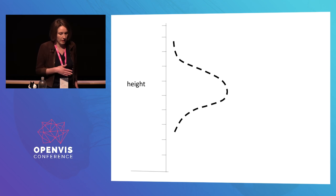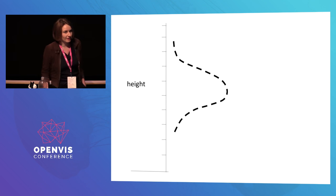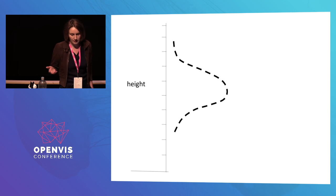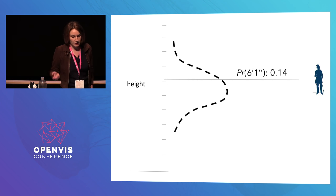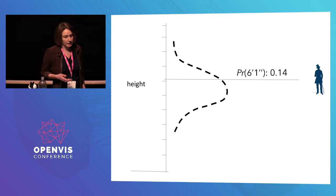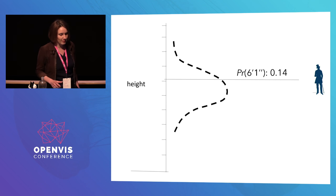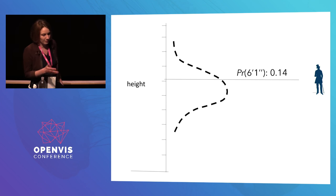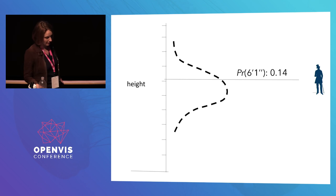Galton was really excited because he knew this was super powerful. Suddenly, without any knowledge about a family's heights, he could simply take this shape and say, for instance, that a random boy has a 14% probability of being 6'1". This was really powerful. But he also knew he could confuse people with it — because really, what does this mean? That boy is going to either be 6'1" or he's not. So what do we do with that 14%?